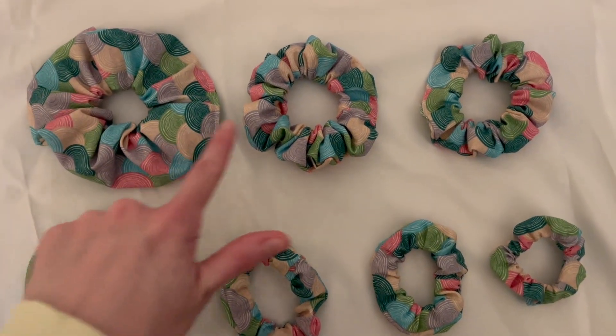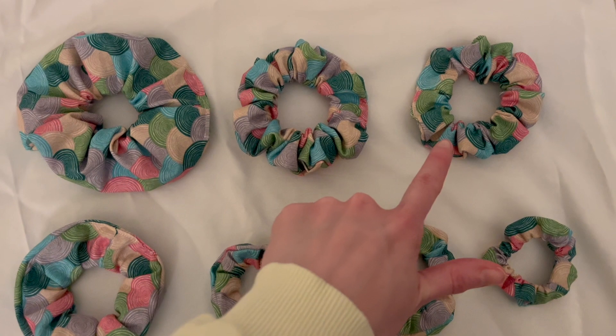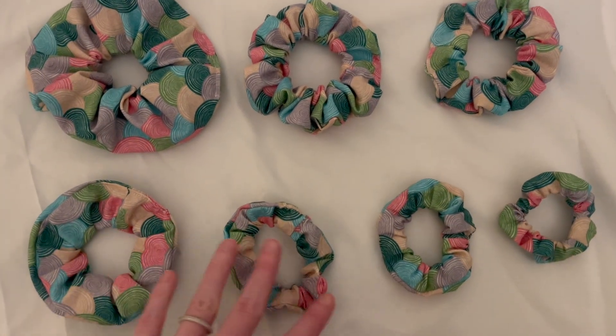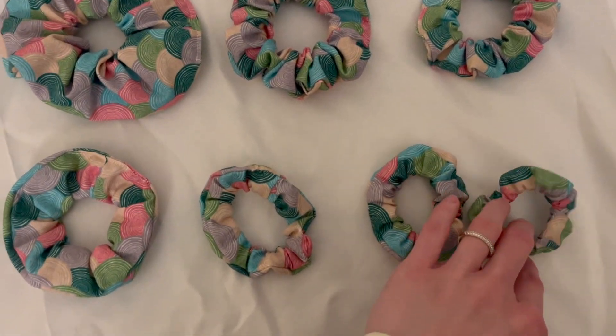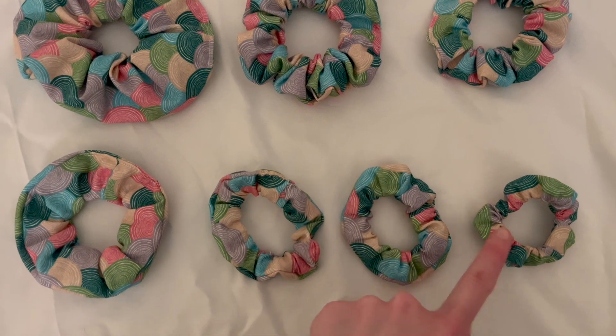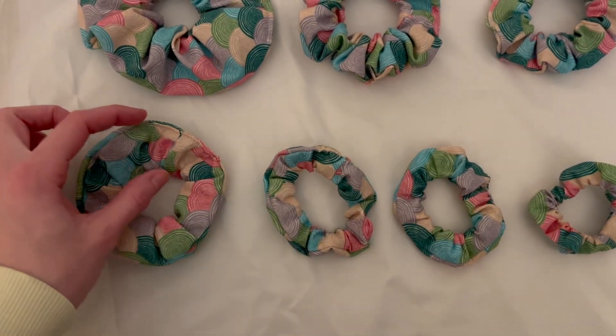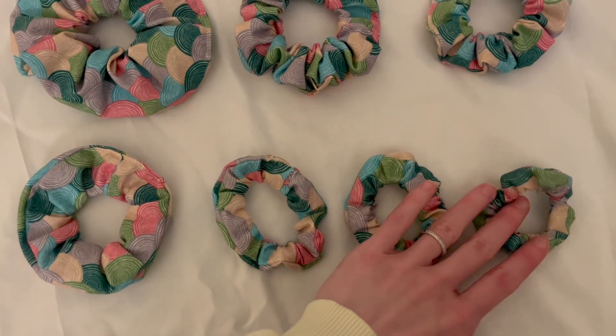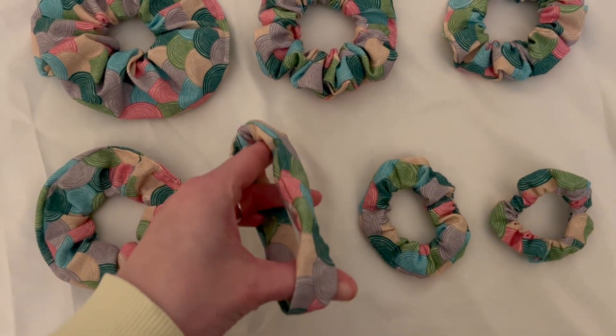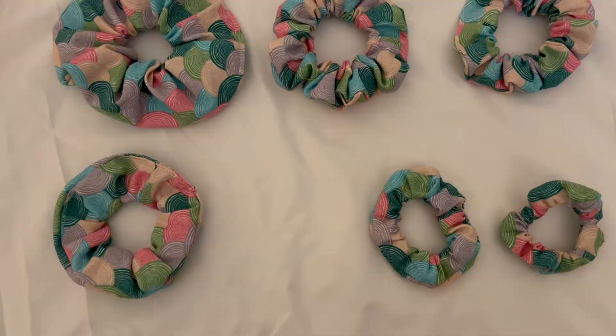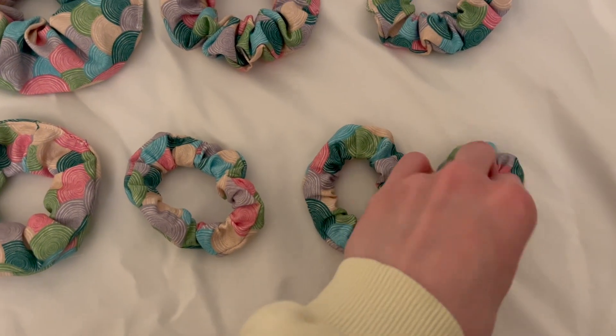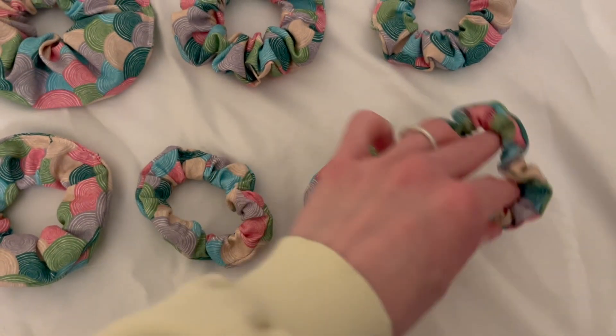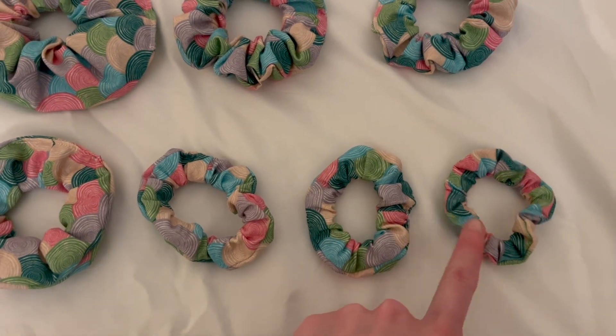So you can see here that I have seven different scrunchies, all different size fabrics, and the fabric changes will allow your scrunchie to be a different size and shape depending on what you need. In addition, the amount of elastic you use will also change how full or not as full your scrunchie ends up looking. So if you want a scrunchie that's more for the size maybe like a kid, you may want to use around six inches versus a normal size scrunchie would be around seven or eight inches depending on how you want to use it.